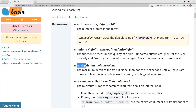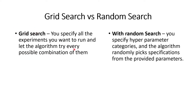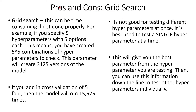With that said, let's get back to Grid Search versus Random Search CV. With Grid Search CV, you specify all the experiments you want to run and let the algorithm try every possible combination. But with Random Search CV, you specify hyperparameter categories and the algorithm randomly picks specifications from the provided parameters. Let's look at some pros and cons of Grid Search CV.